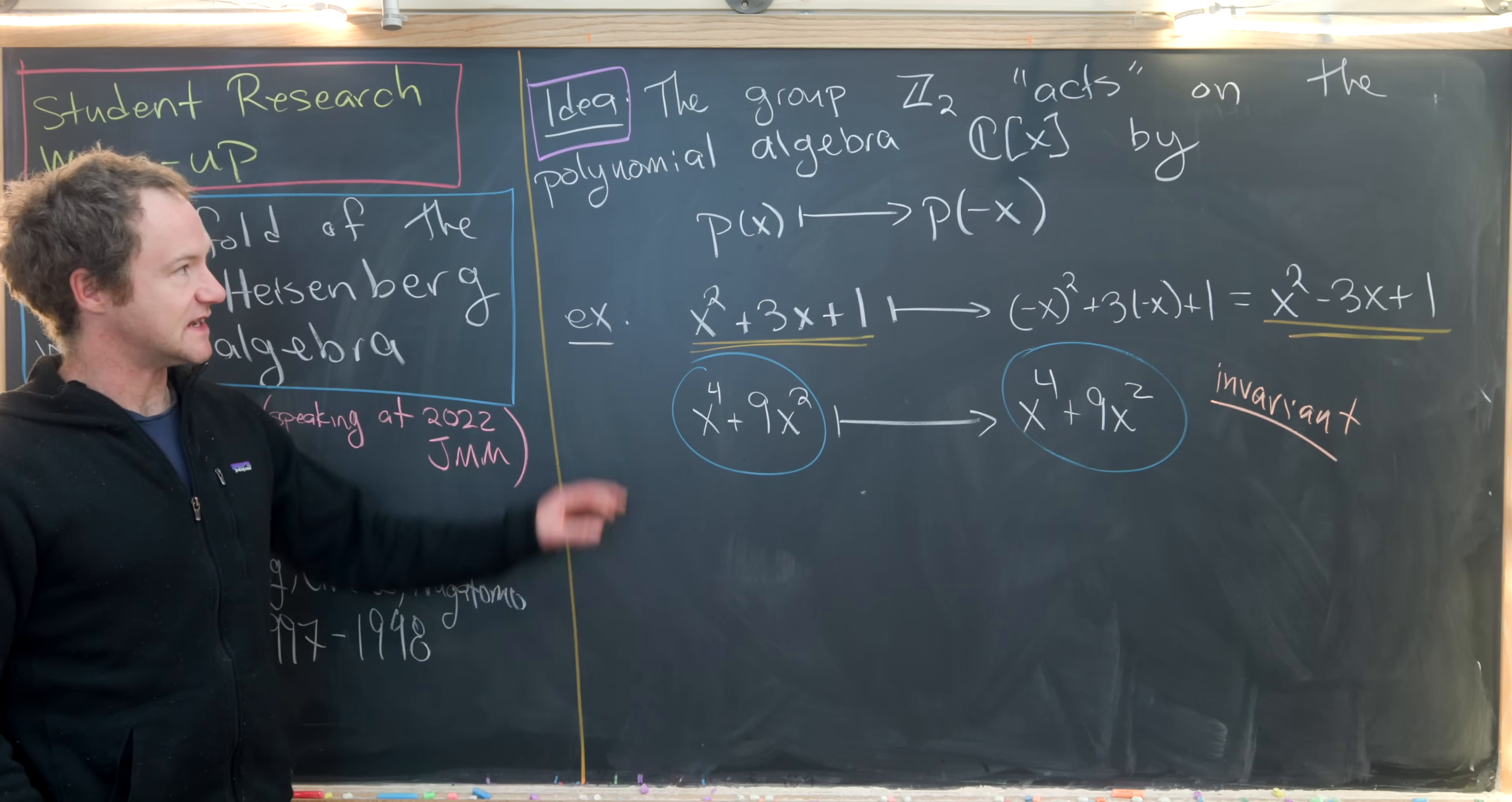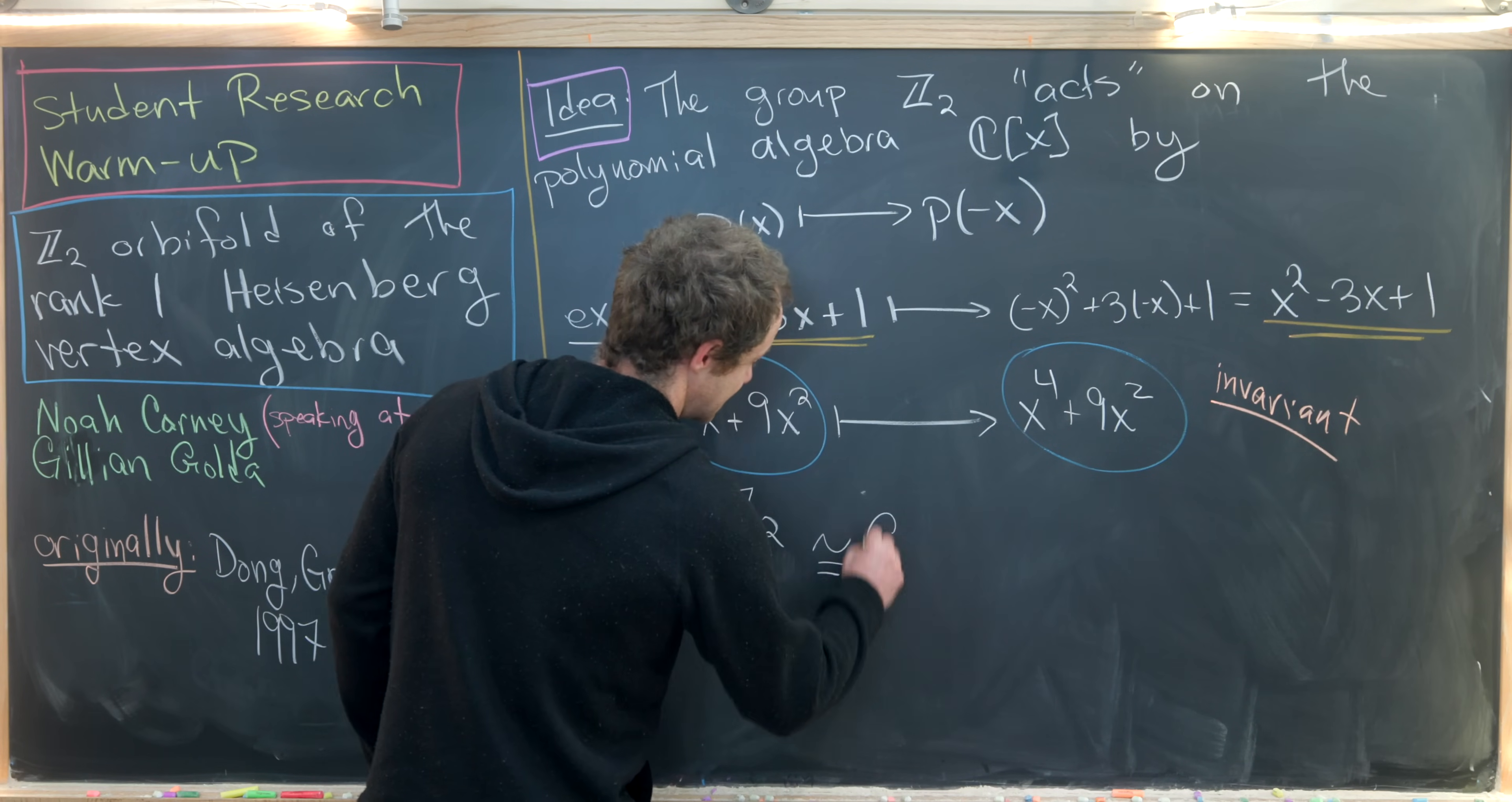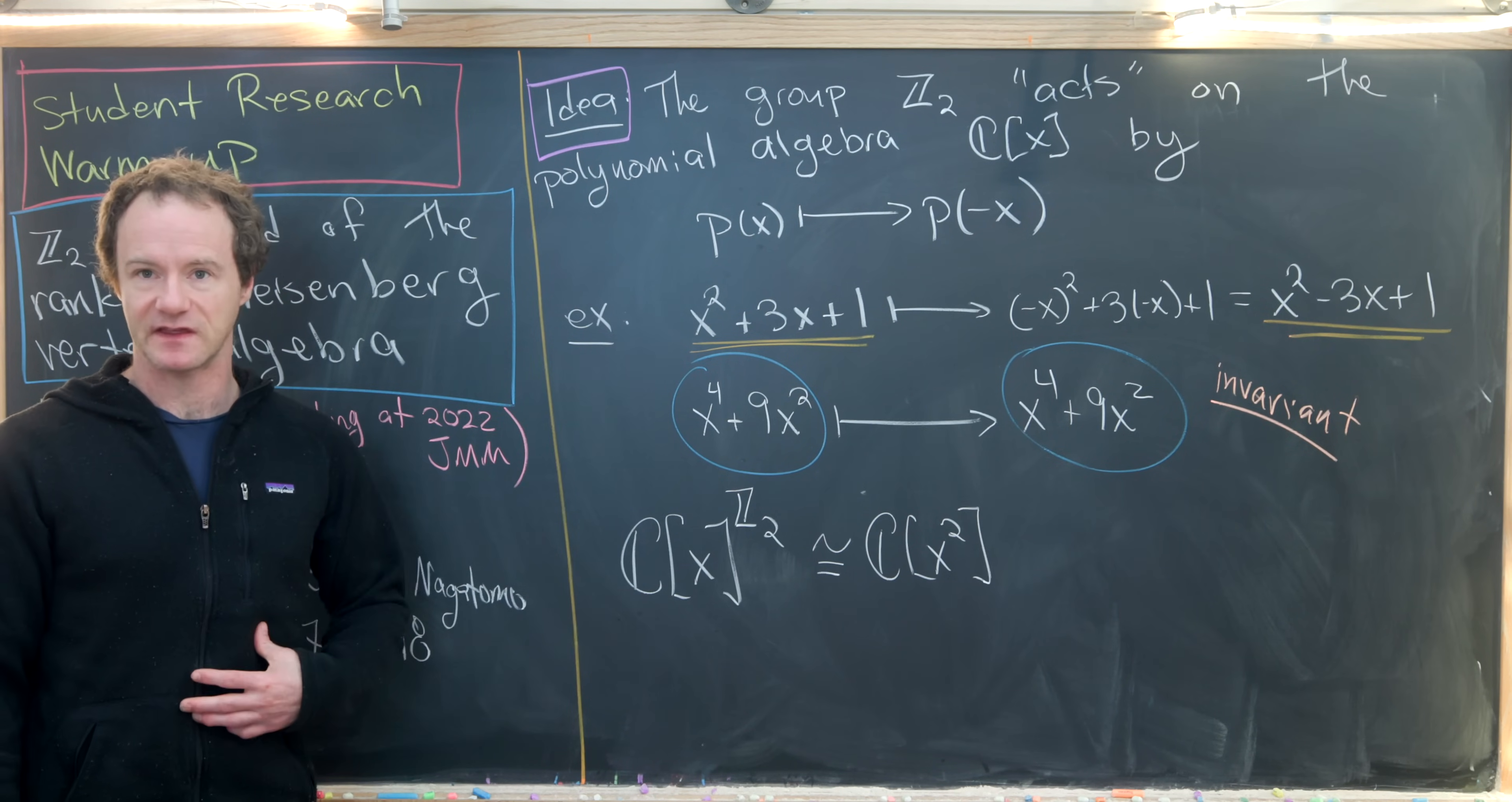So we would say that this is an invariant polynomial. It's not too hard to see that all of the invariant polynomials under this action will be exactly the even polynomials. We could denote that space as C[X]^{Z2}, meaning all polynomials invariant under this Z2 action. That's just the even polynomials, so this is just the polynomial ring where our variable is X squared instead of just X.